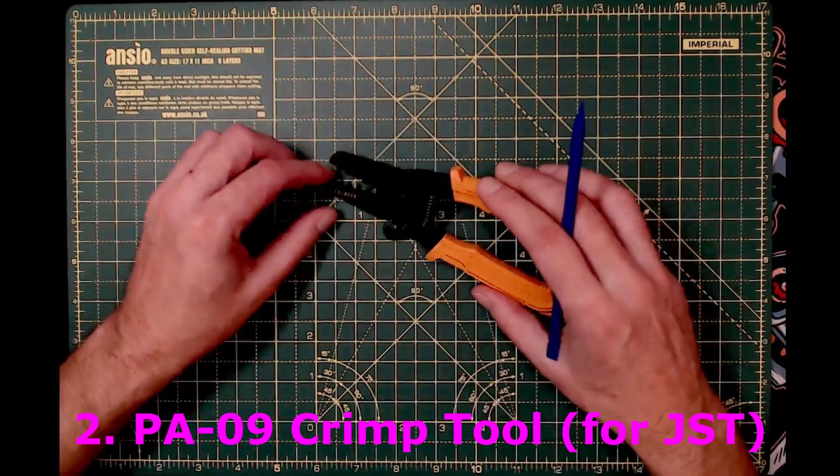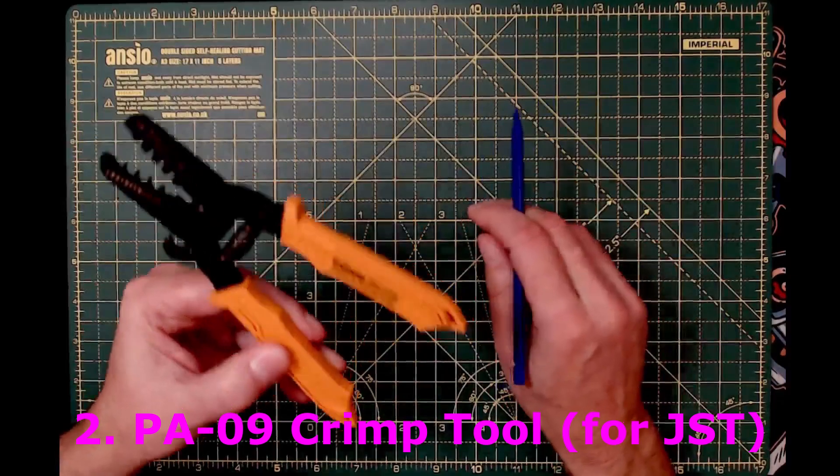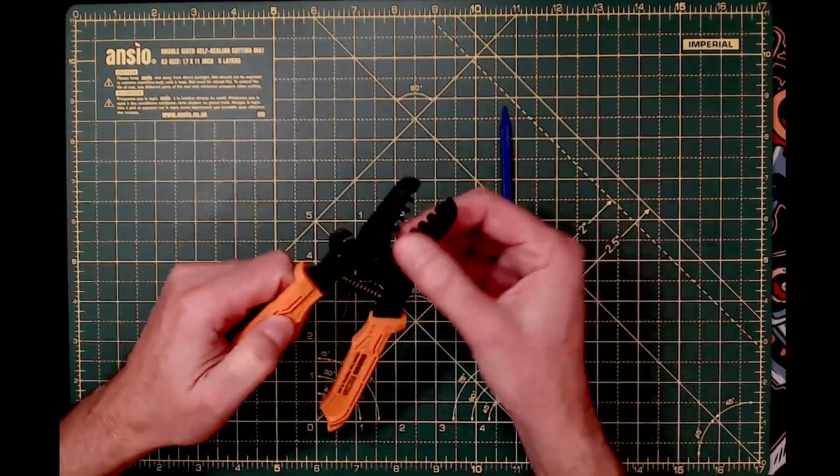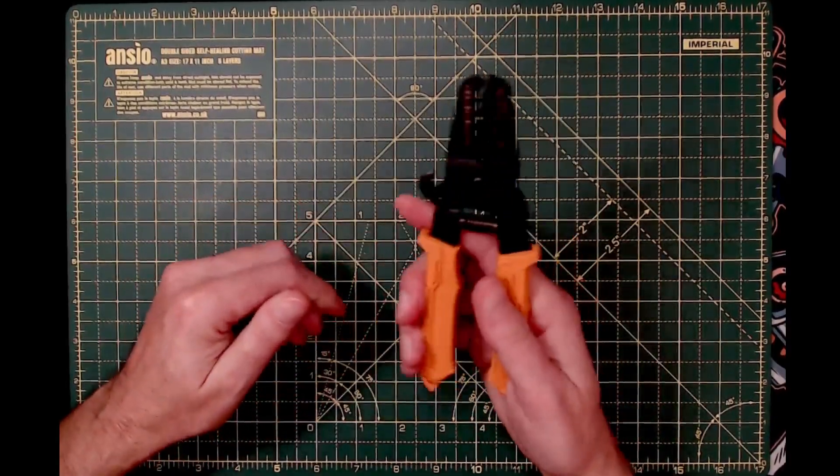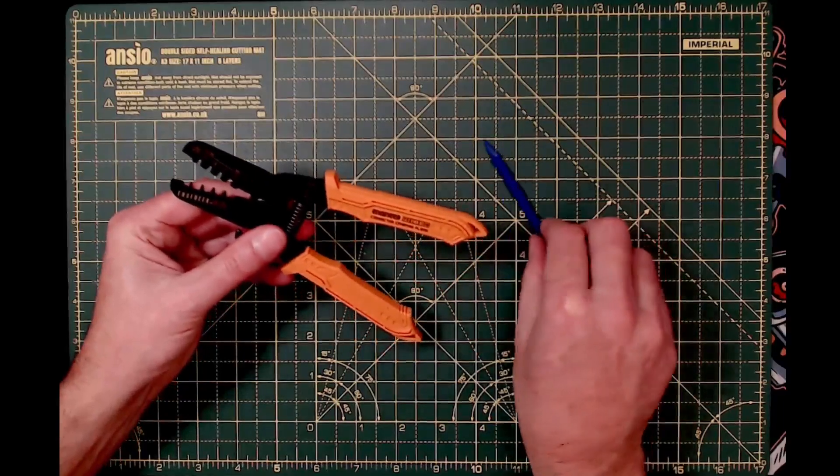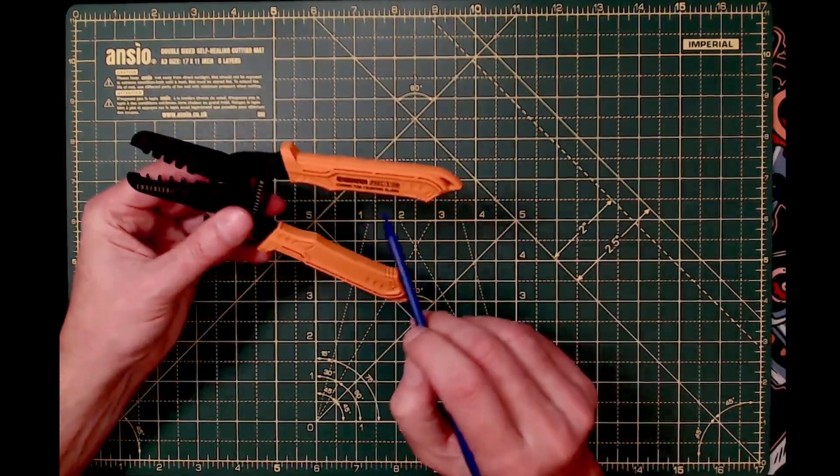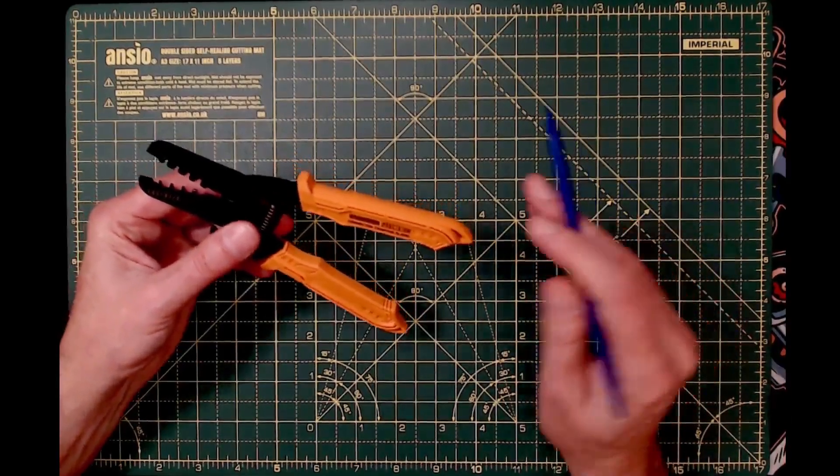Just to add: for those JST connectors, this is the correct tool. Don't try anything else. This is much slimmer than all my other crimp tools. I've tried various ways—get the right tool and you won't have a problem. The reference is PA09, I'll include the link below.